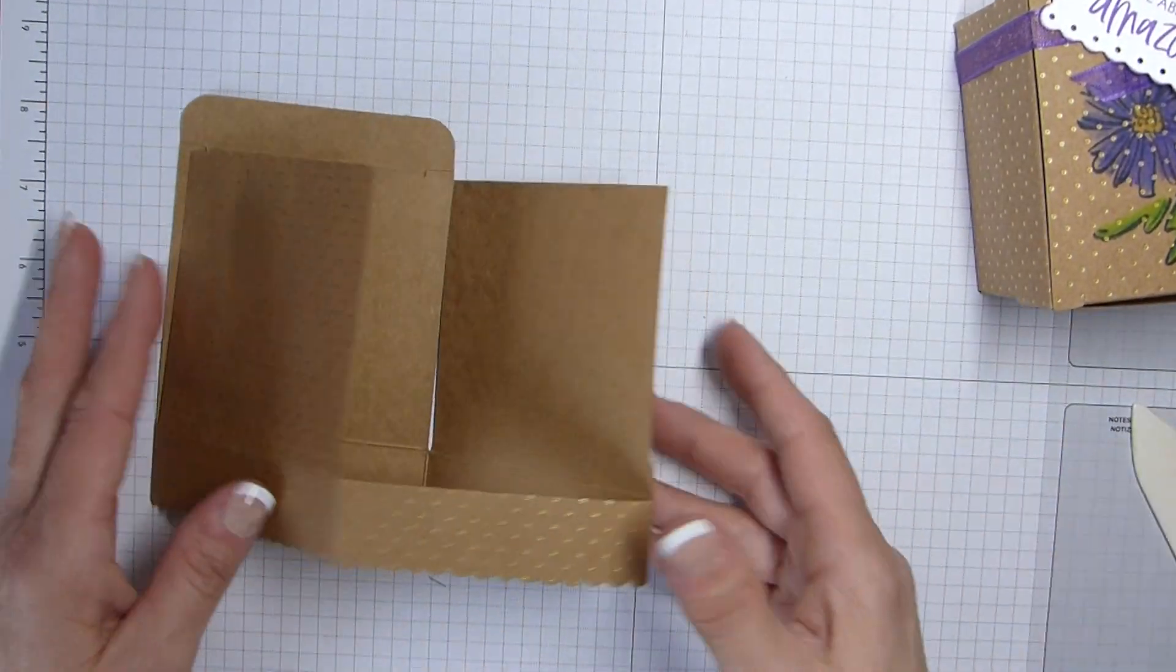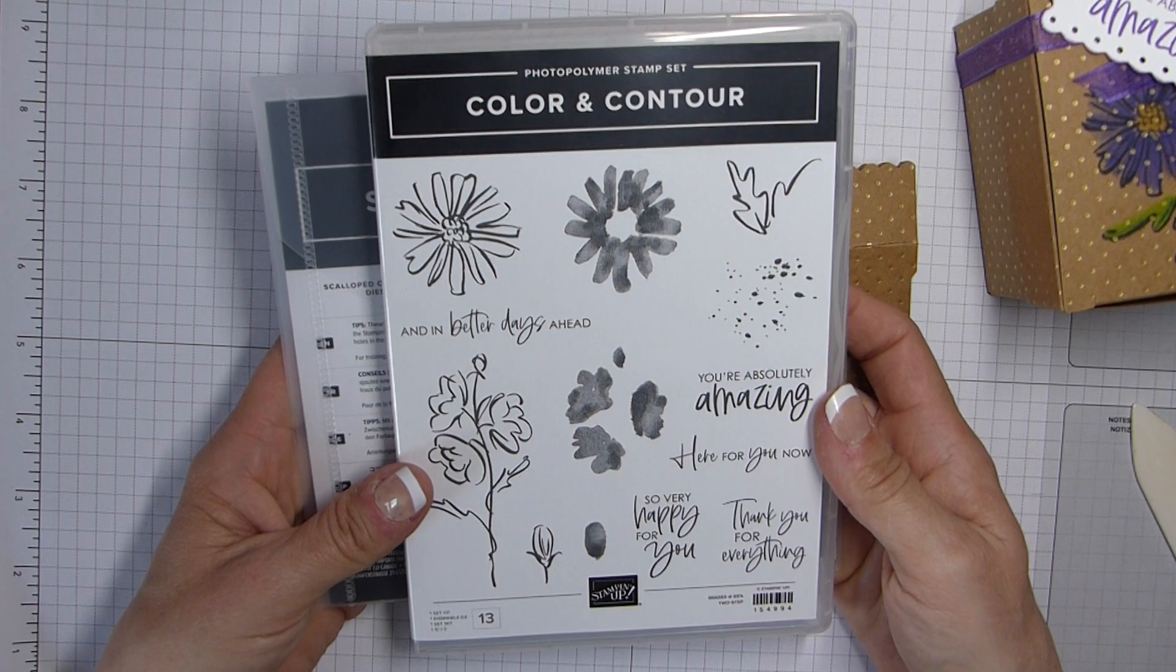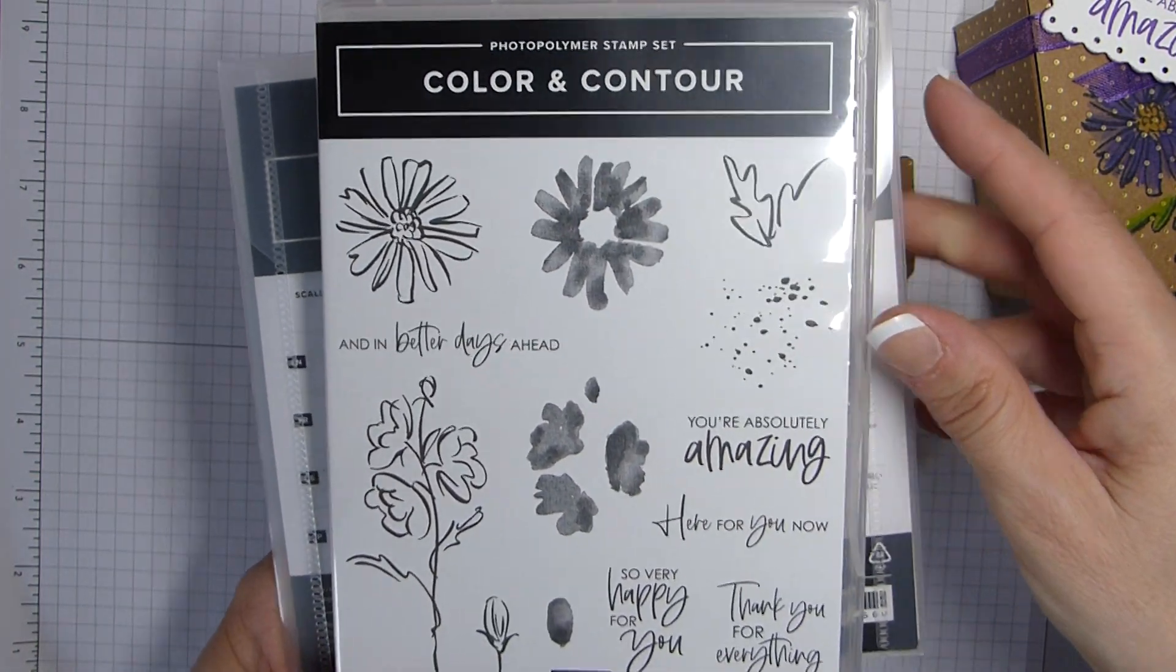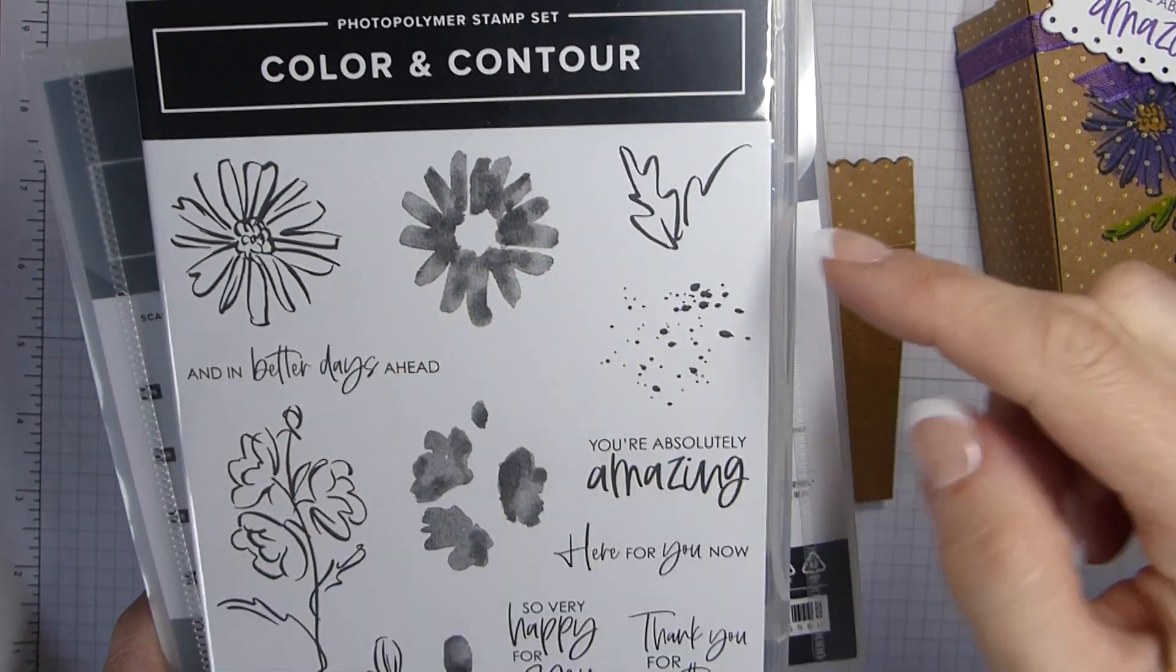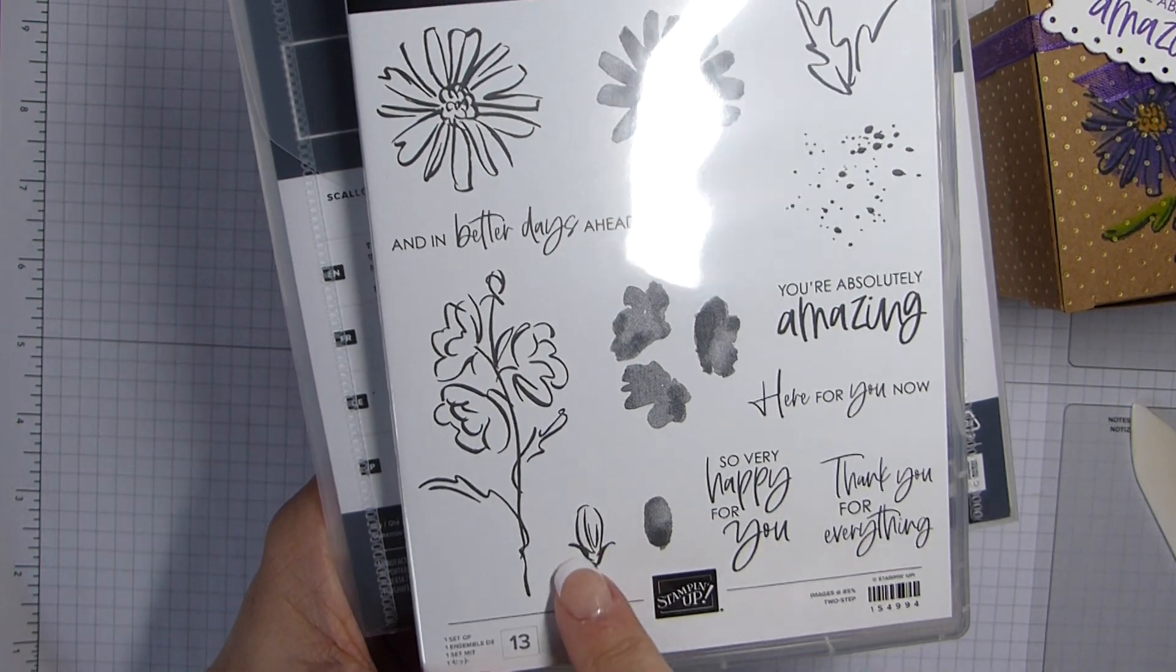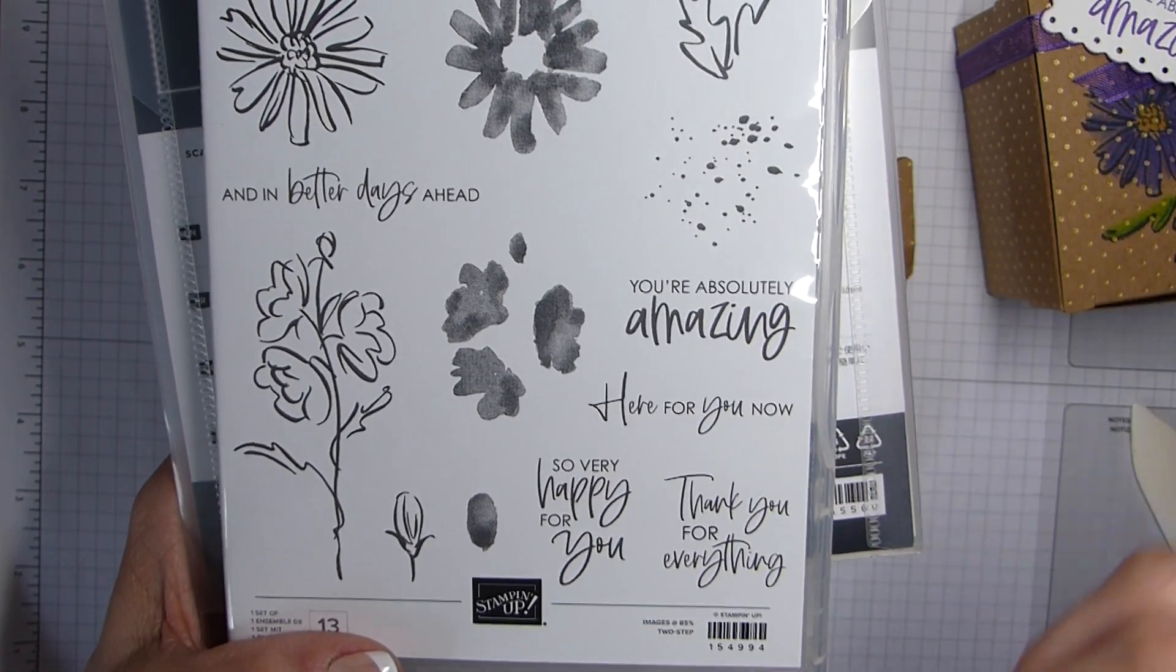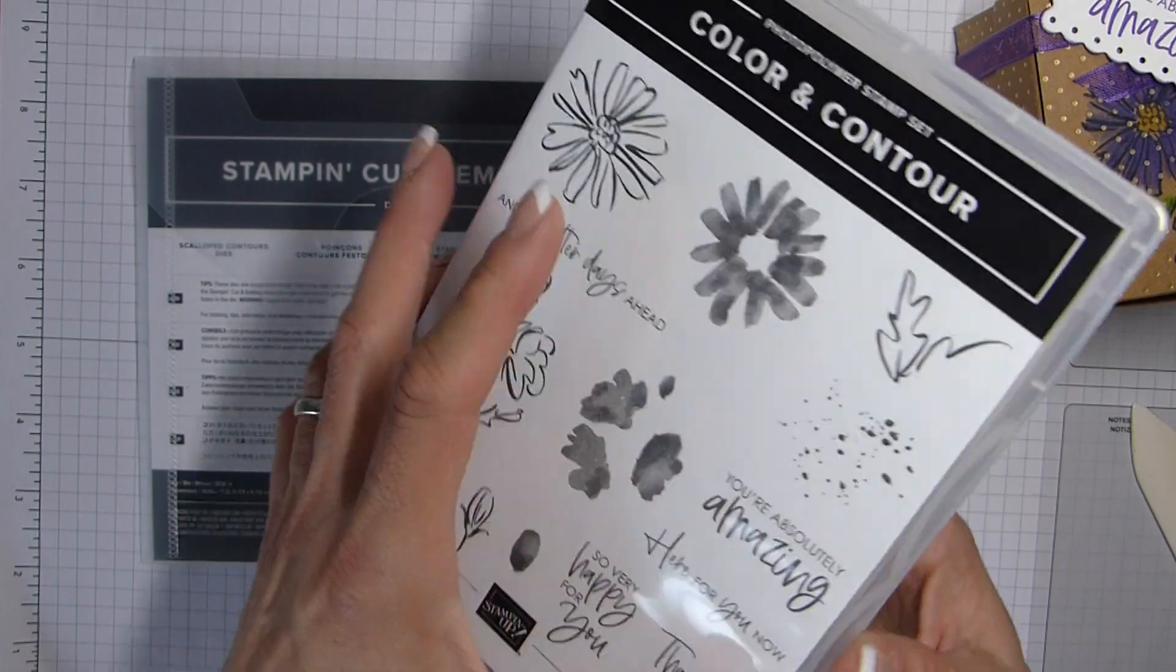I'm going to pop that bit to one side because to decorate mine I've used this beautiful new bundle, Colour and Contour. My way of describing them would be sort of free hand style pictures. Two steps. So we've got the outline and then the colouring in. A lovely bit of splodges here, some leaves, some sketched flowers and the two step to colour them in. And then some really lovely sentiments with some great fonts. I really quite like these sort of scribbly fonts. So those are the stamps. They are photopolymer.